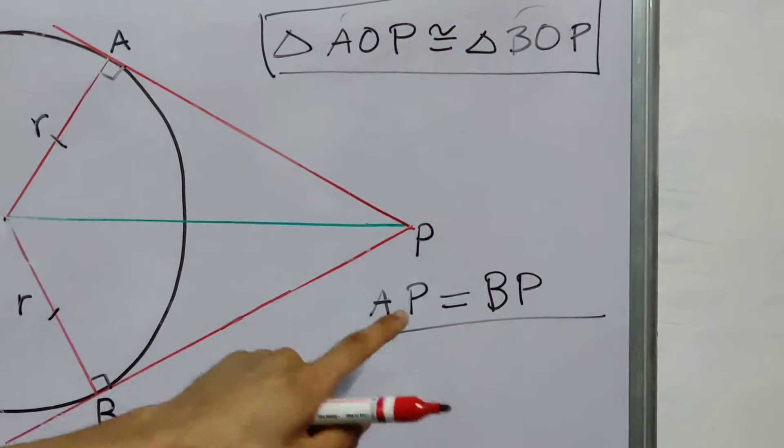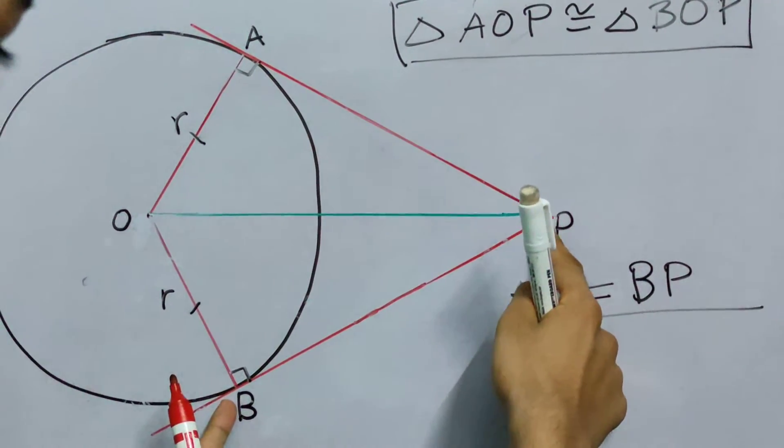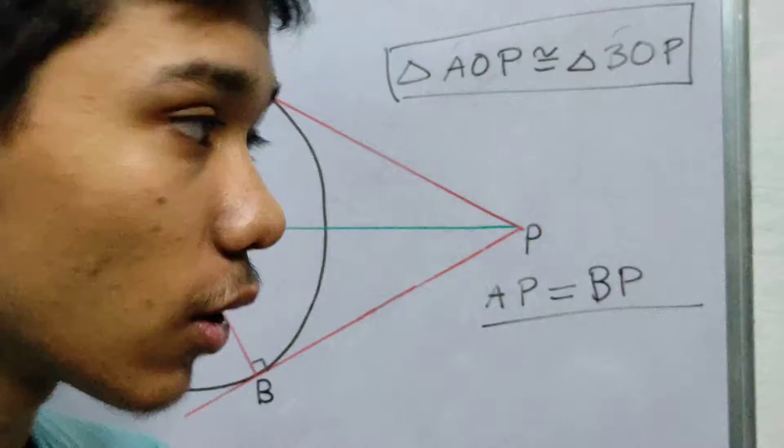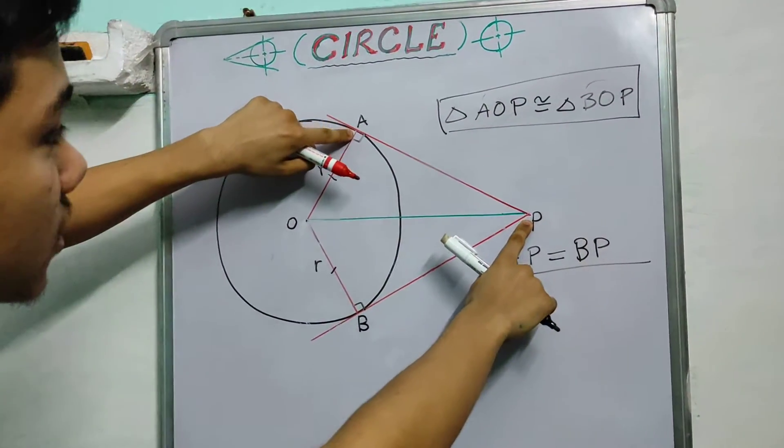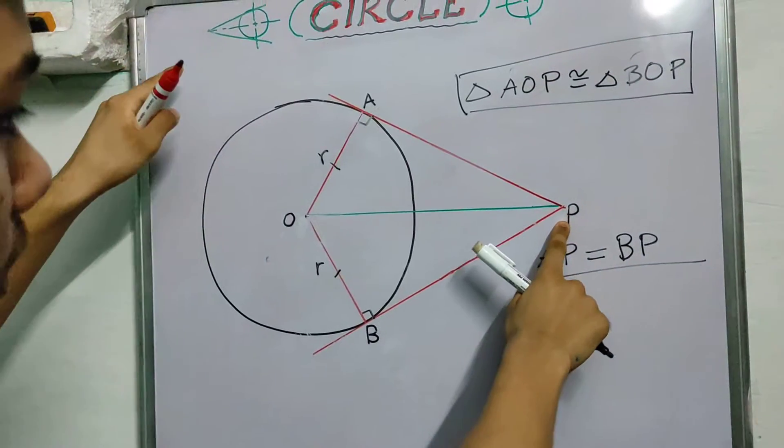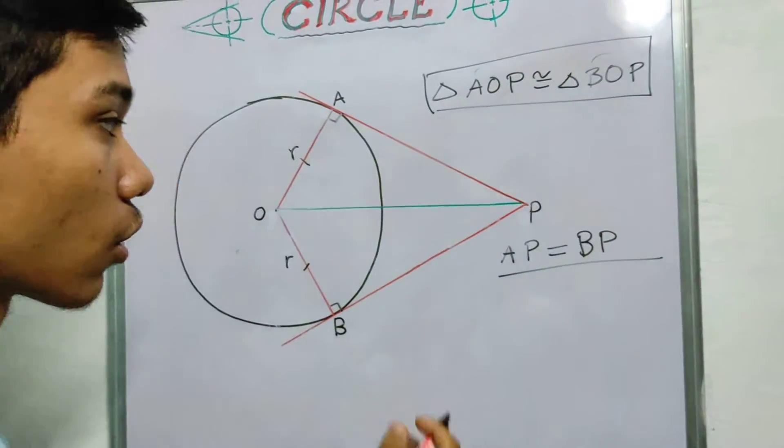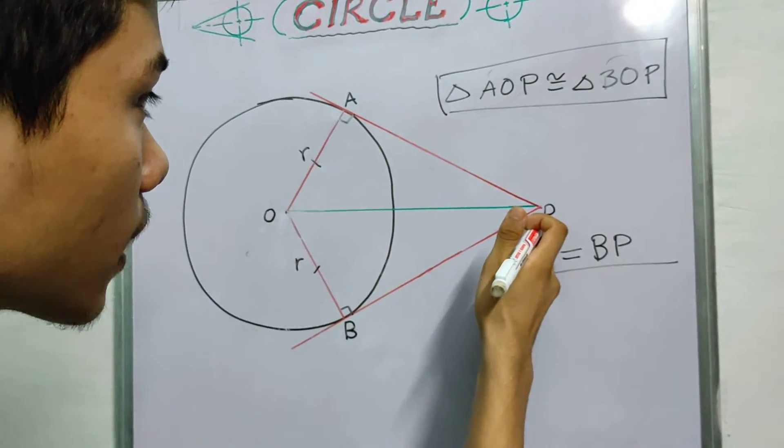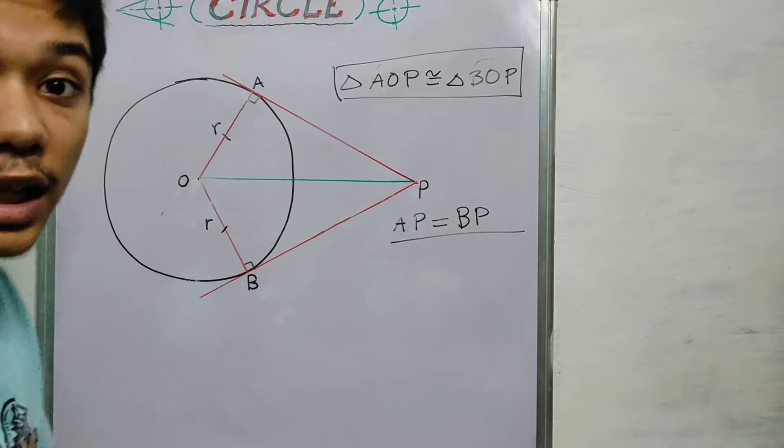But what are they? See, AP is this one and BP is this. These are nothing but the lengths of these tangents. The length of the tangent was from this point to the point where it touches the circle, not anywhere else. So, tangents which are drawn from a point to a circle, there are two tangents: one, two. They are equal in length.